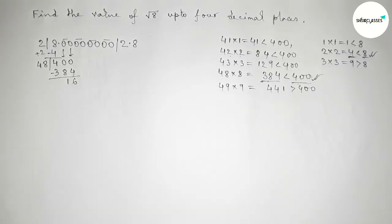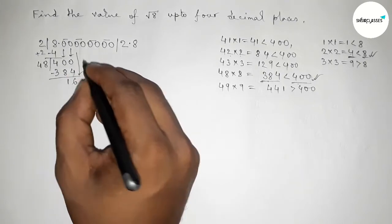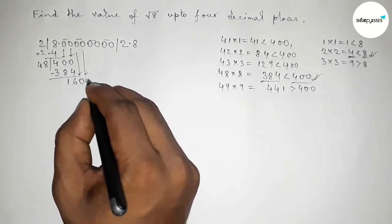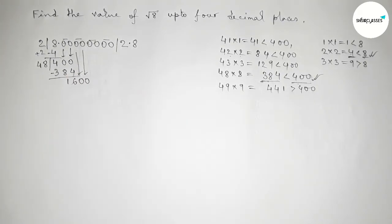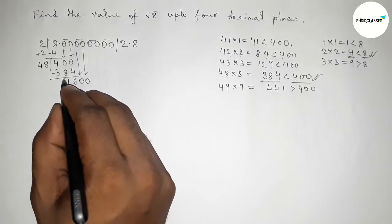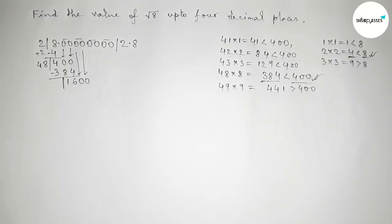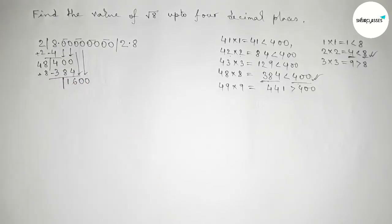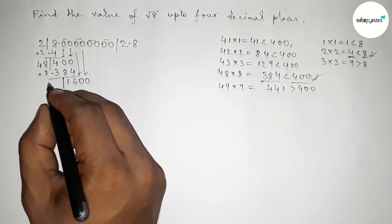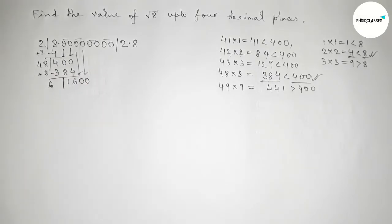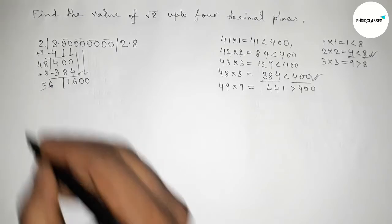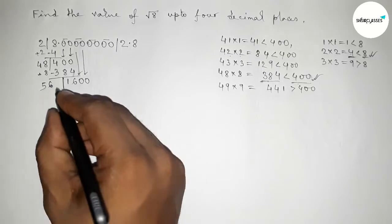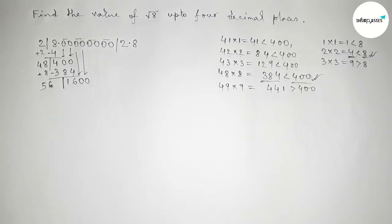Bring down the next pair of zeros. Draw the division line. The last quotient digit is 8, so we add 8 to itself: 8 plus 8 equals 16, carrying 1 gives 56 as the new partial divisor.